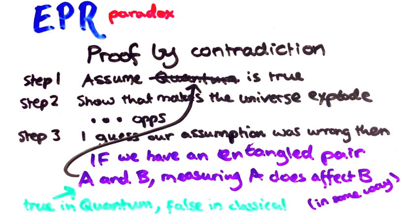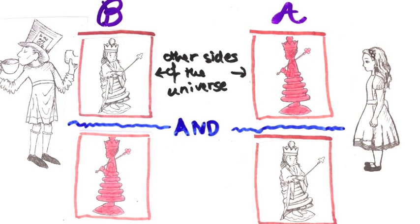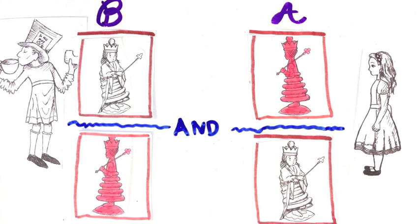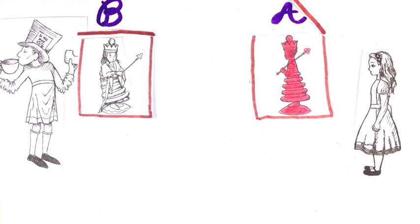Okay, so now, say that our boxes get shipped to the other sides of the universe, to Alice and Bob. Alice opens hers a split second before Bob opens his.